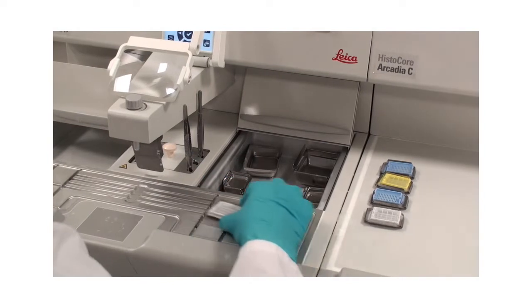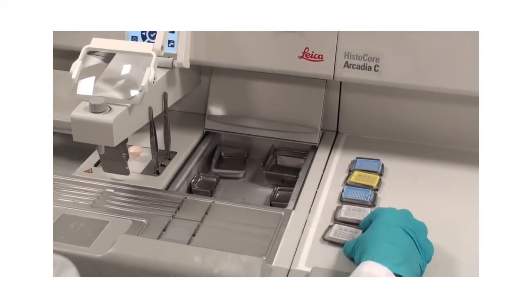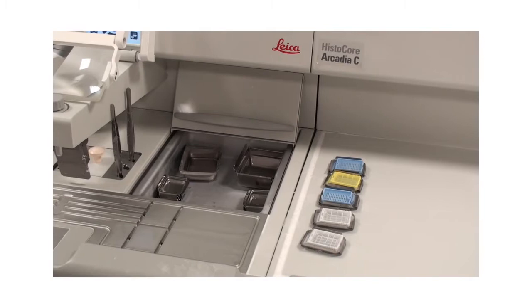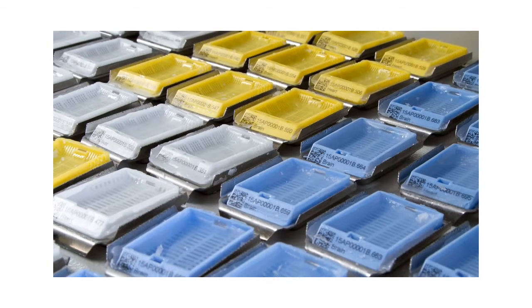Store your filled molds on the cooling plate of Arcadia C. The cold plate is held at a constant temperature of minus 6 degrees Celsius. The generously dimensioned cooling surface has room for around 60 blocks.